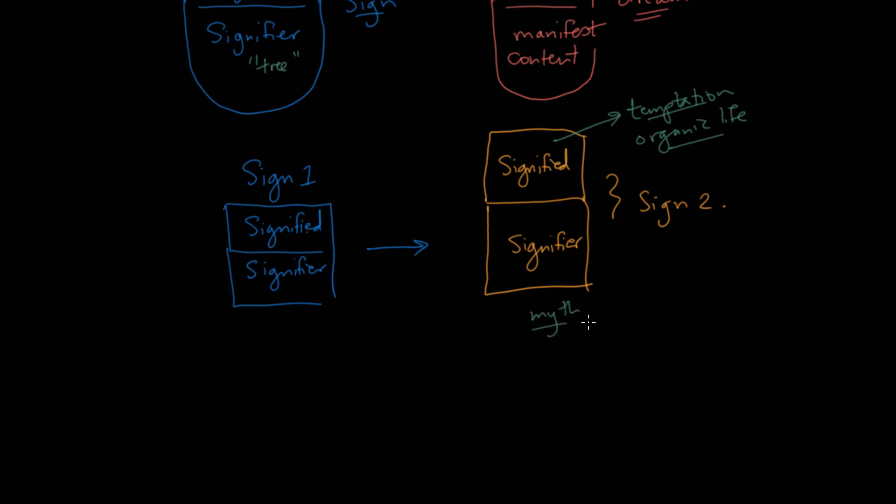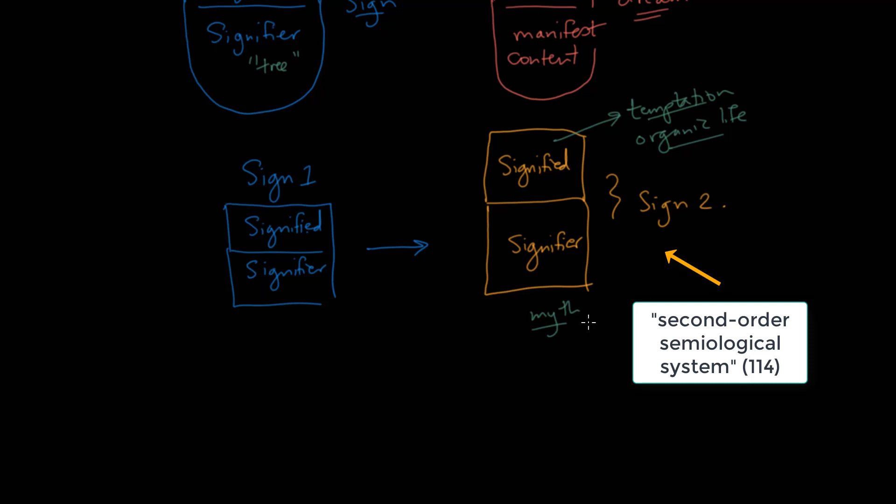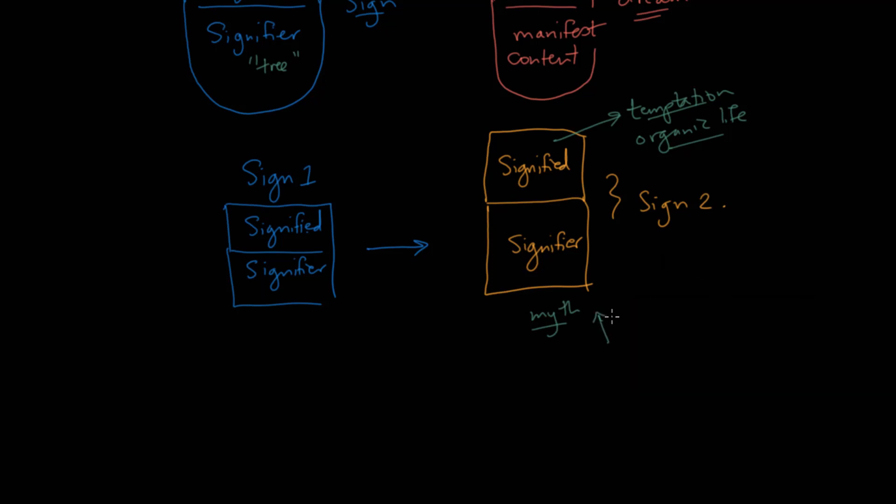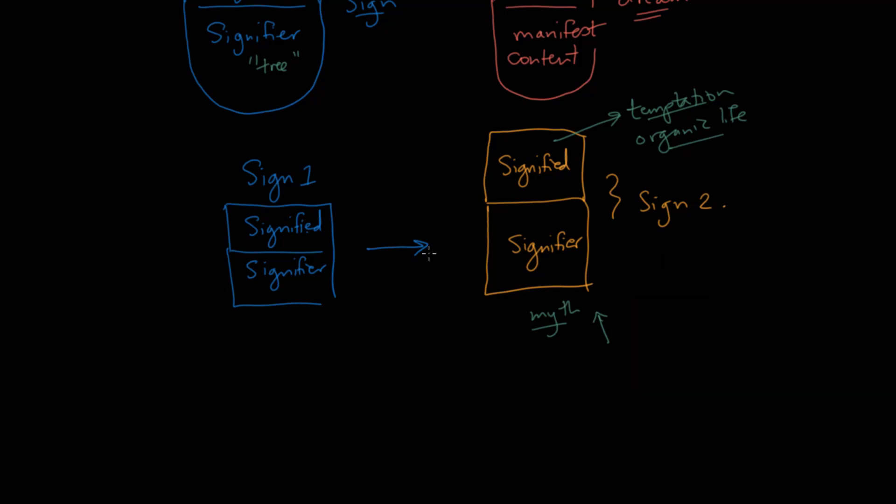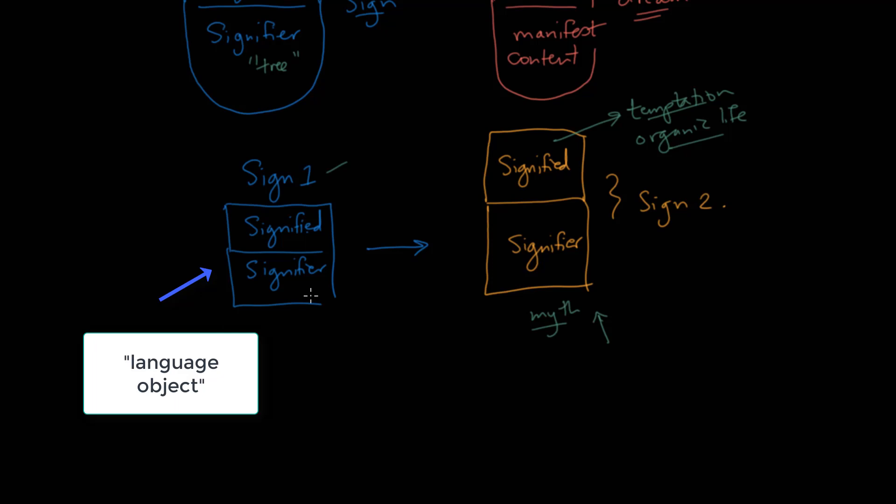So what Barthes argues then is that when it comes to myth, we are dealing with what he calls a second-order semiological system, right? That's this part. We've added this to the first part, the basic sign. He also calls this a meta-language. So it's about another language. It interprets another language. Conversely, he calls the first sign a language object. It's the object that can be used for new purposes.